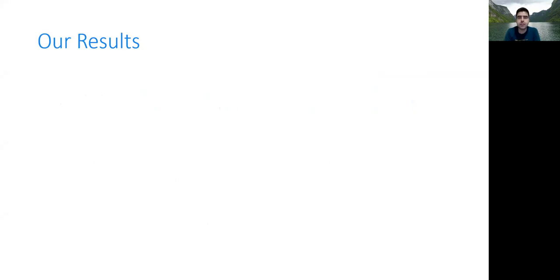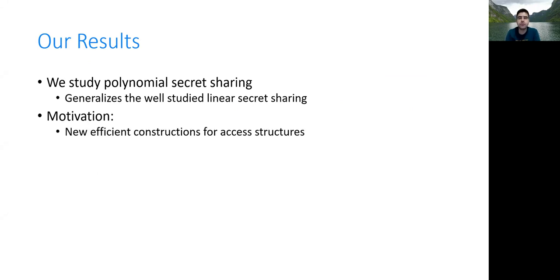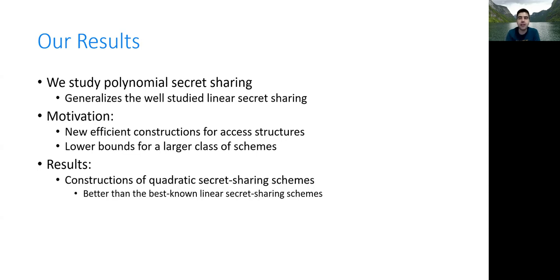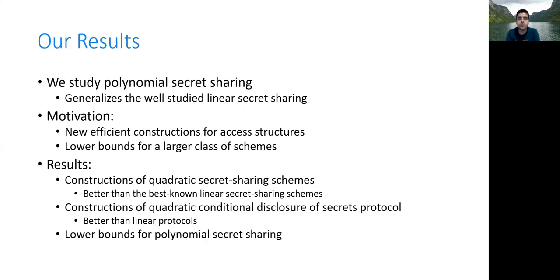I will start by a general description of our results. We study polynomial secret sharing, which generalizes linear secret sharing. The motivation in studying polynomial secret sharing: first, we want to construct new efficient secret sharing schemes for certain access structures; and second, we want to prove lower bounds for a larger class of schemes. In terms of results, we construct quadratic secret sharing schemes that are better than the best known general secret sharing schemes, and we construct quadratic conditional disclosure of secret protocols that are better than the linear protocols. We also prove lower bounds for polynomial secret sharing.